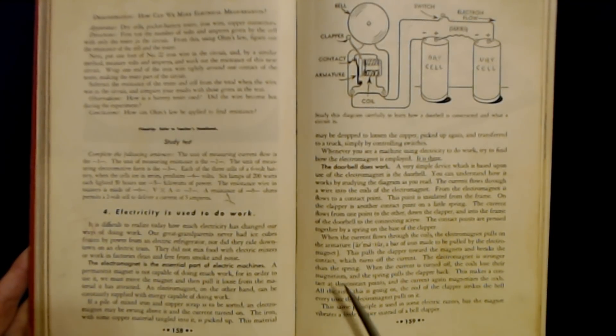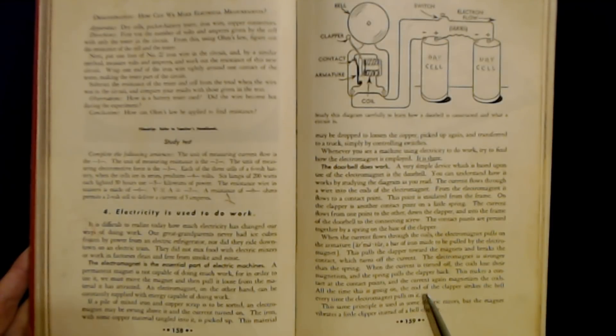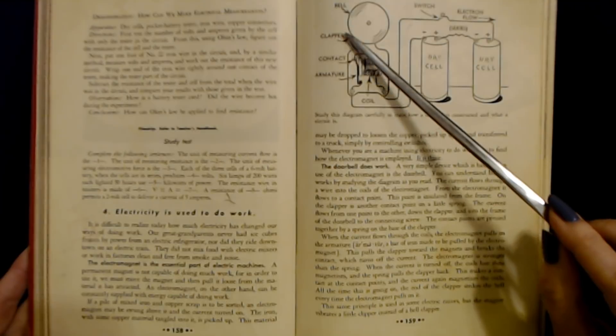The electromagnet is stronger than the spring. When the current is turned off, the coils lose their magnetism and the spring pulls the clapper back. This makes a contact at the contact points and the current again magnetizes the coils. All the time this is going on, the end of the clapper strikes the bell every time the electromagnet pulls on it.